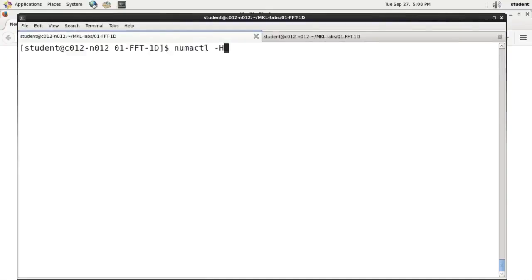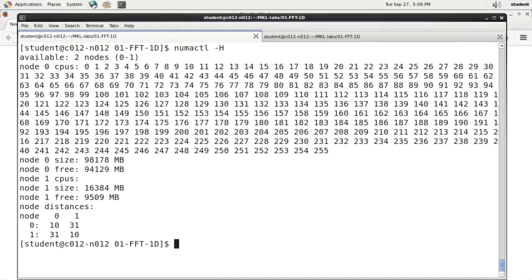As a reminder, NUMA node 1 is my high bandwidth memory. So once again, while this calculation is running, here is the memory utilization.